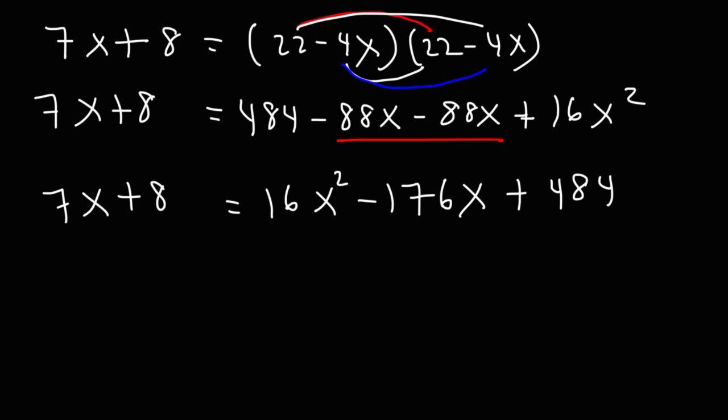Now we have a quadratic equation on the right side. So what we're going to do is take everything from the left side and move it to the right side. We can do this by subtracting both sides by 7x and by 8.